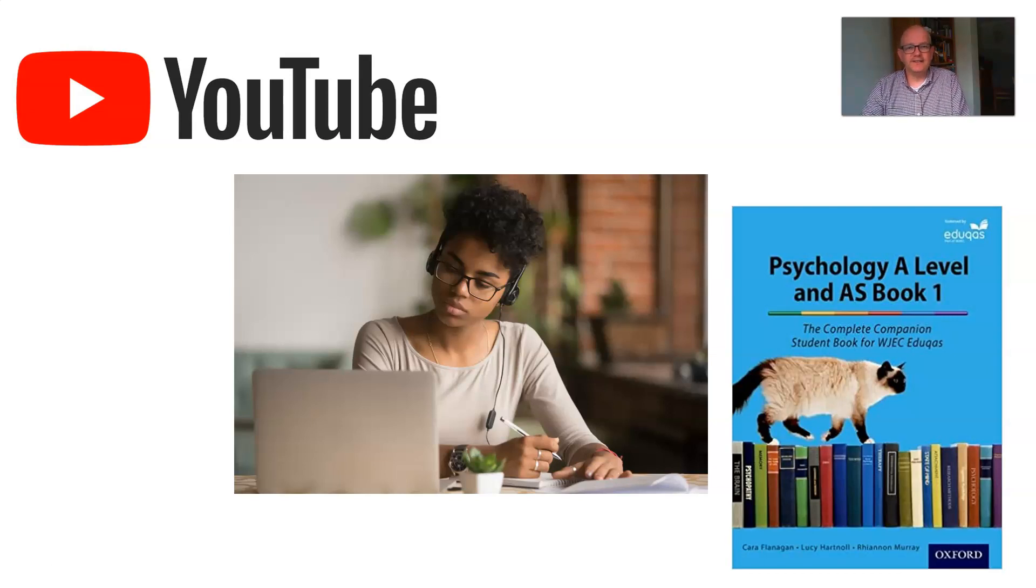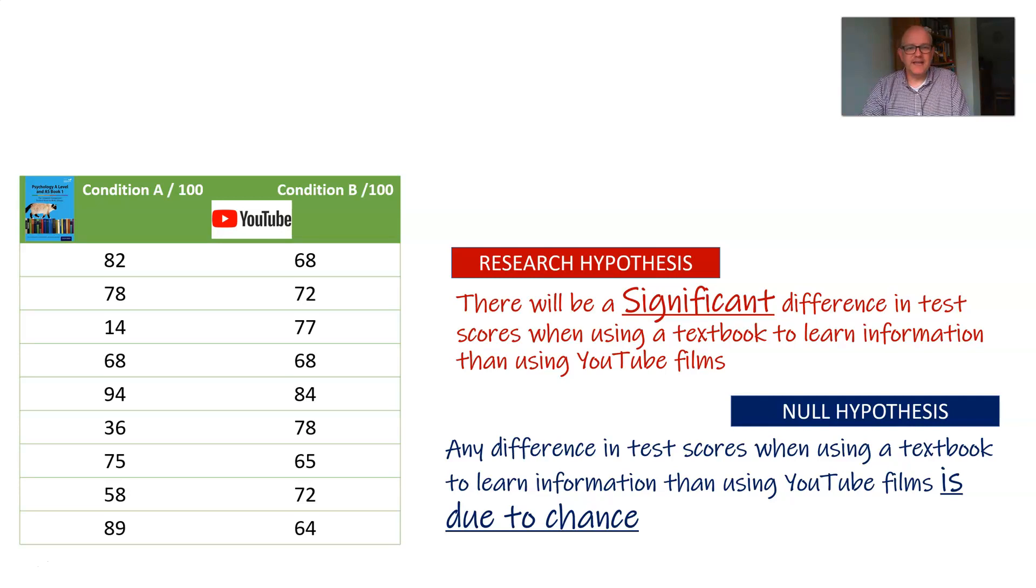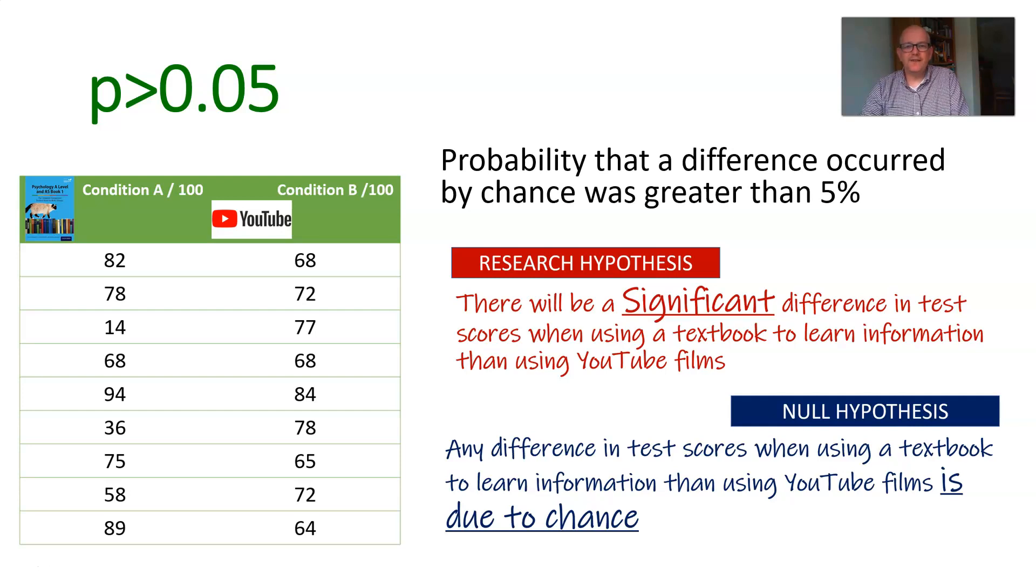Back to my study then, I'm looking at textbook and YouTube. Here's my hypothesis, here's my data. So what I did was I used an inferential statistical test called a Mann-Whitney U to see if my data fell below the level of significance. And this is what I found. What this means is the probability that my difference occurred by chance was greater than 5%. So what does that mean for my hypothesis? It means that I've got to say my null hypothesis is correct, I've got to accept that. Because I can't rule out chance. It's due to chance. And so therefore, I will reject my research hypothesis. So I guess it didn't matter whether you use YouTube or textbooks. It's about something else.